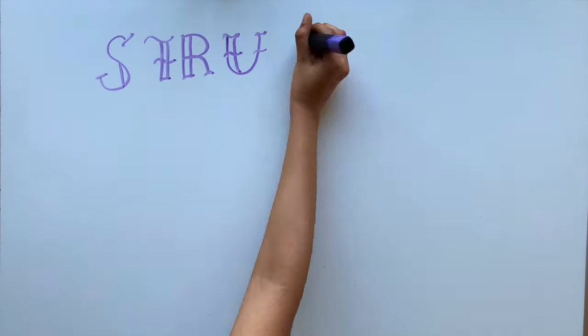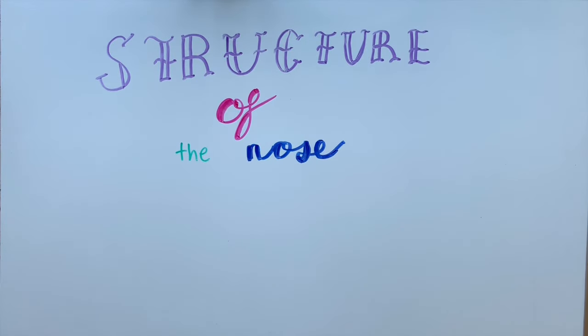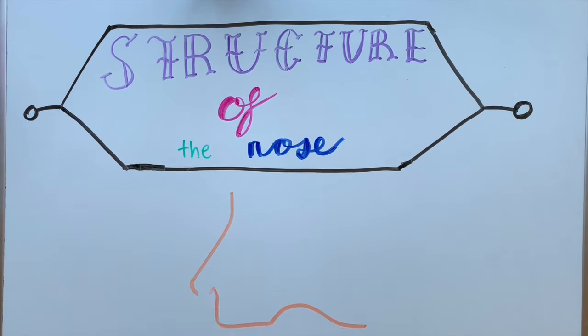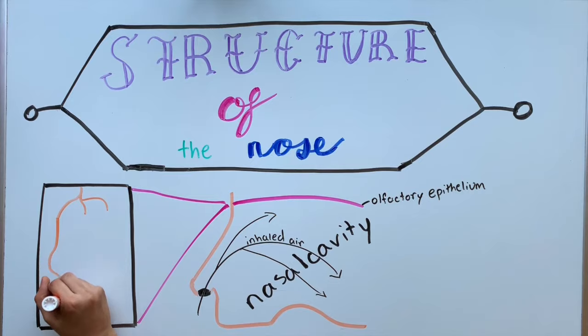To understand how we register smell, we must learn about the structure of the nose. At the top of our nasal cavity is a thin sheet of cells called the olfactory epithelium. On the olfactory epithelium, there are three types of cells.